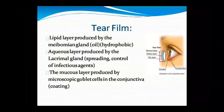The next is the tear film. It has a lipid layer produced by the meibomian gland, which is an oily and hydrophobic gland. There is also an aqueous layer produced by the lacrimal gland. So there are two layers: lipid and aqueous. The third layer is mucus, produced by goblet cells in the conjunctiva.